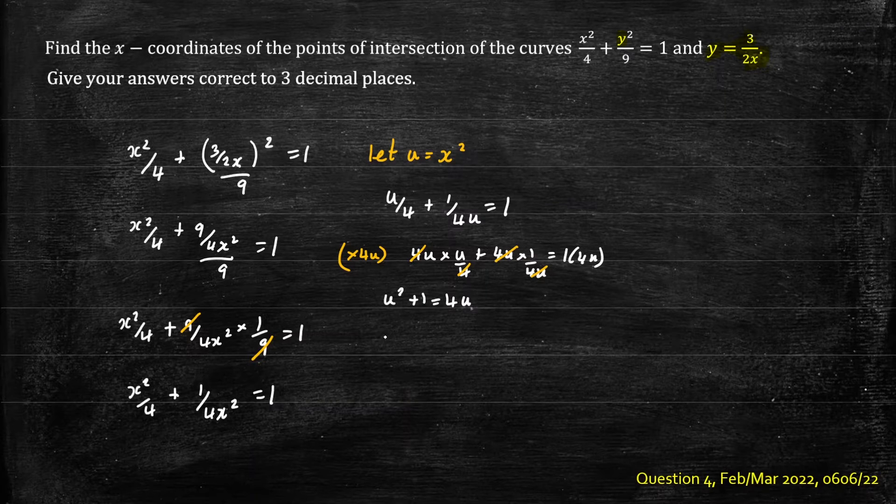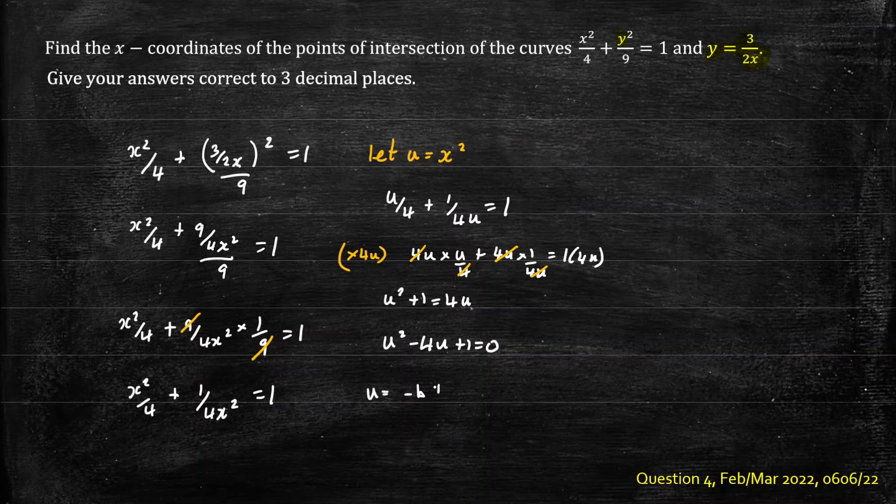That will give us u squared plus 1 equals 4u. Subtract 4u from both sides. We'll get u squared minus 4u plus 1 equals 0. Now we have a quadratic equation that we can solve. We can't factorize it so we need to use the quadratic formula. The quadratic formula is u equals negative b plus or minus the square root of b squared minus 4ac all divided by 2a.